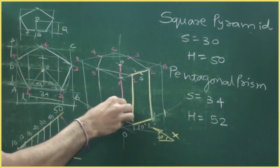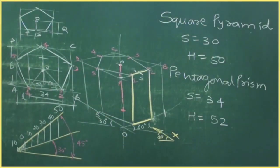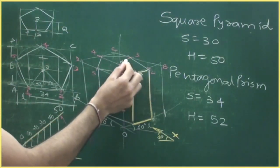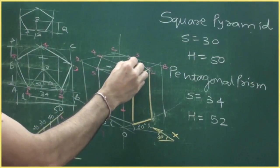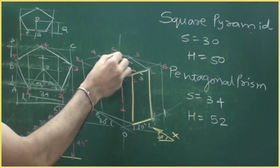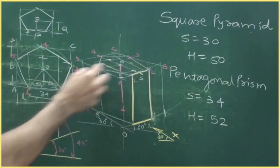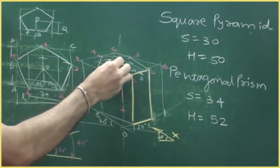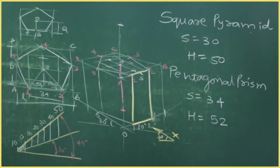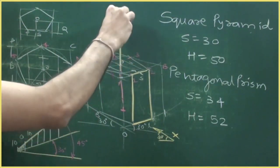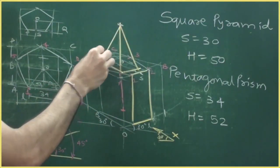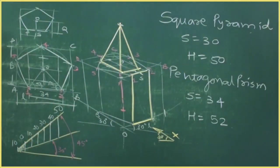Now I need to draw the square pyramid. From the center point, draw lines parallel to the 30-degree direction — how much is this distance? 15 mm. So cut 15 here, 15 here, 15 here, and 15 here to get the base of the square pyramid. The height is 50, so from here go up by 50 — take 0 to 50 or 40 to 10 on the isometric scale — cut it over here and join to get the square pyramid.